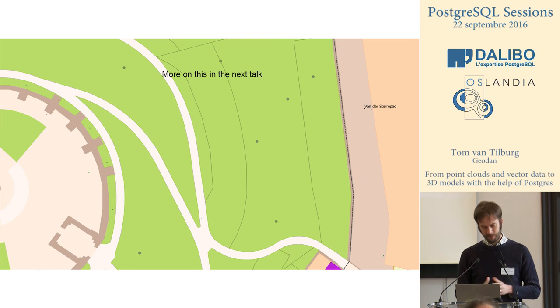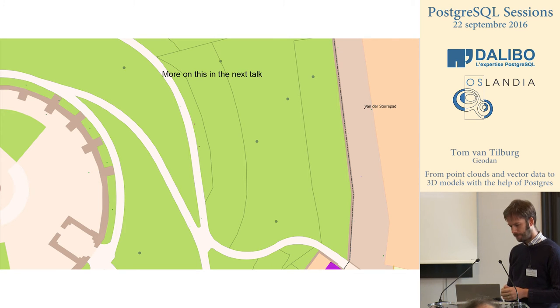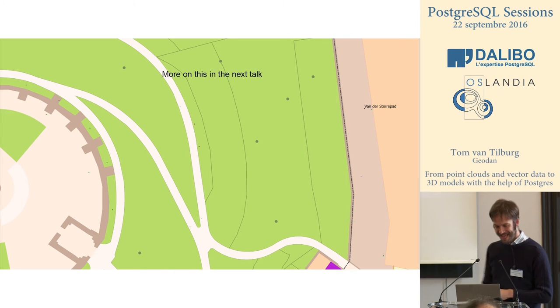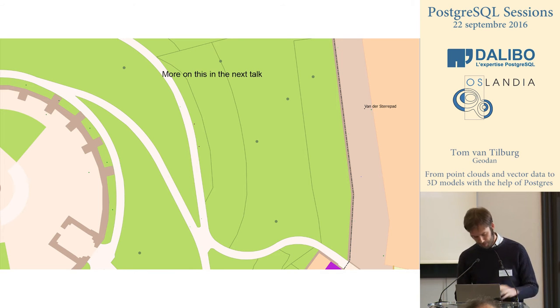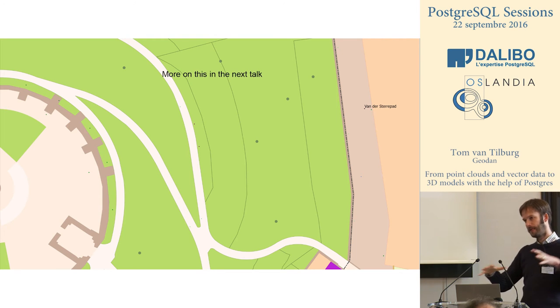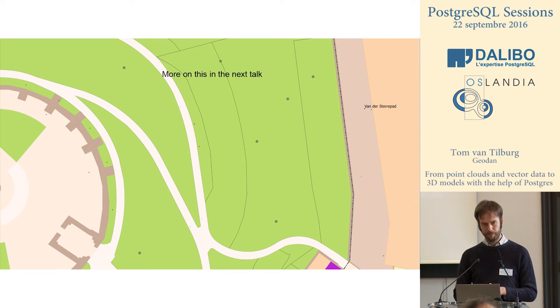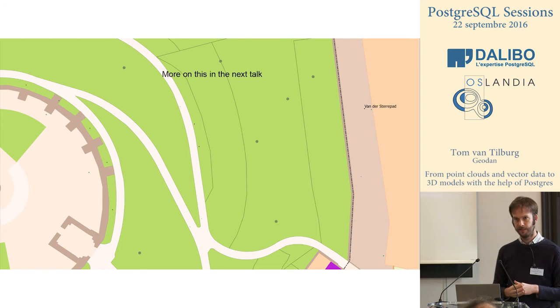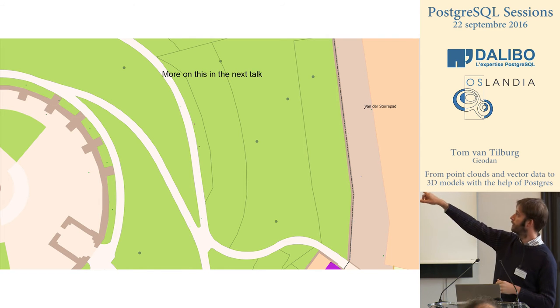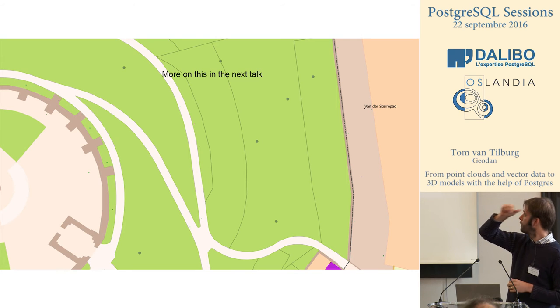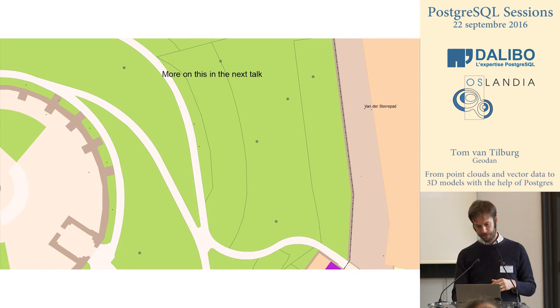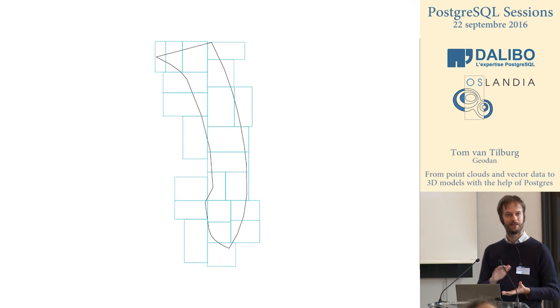Now I'll take you through the process of how we did this. This is a small hill in the town where I live — I wanted to get that hill into three dimensions. The cadastral data is pretty detailed: you can see little footpaths going up the hill, a small castle on the left with a wall. You can see one patch exactly in the middle with a black line around it — I'm going to use that as an example of how we made a 3D model.